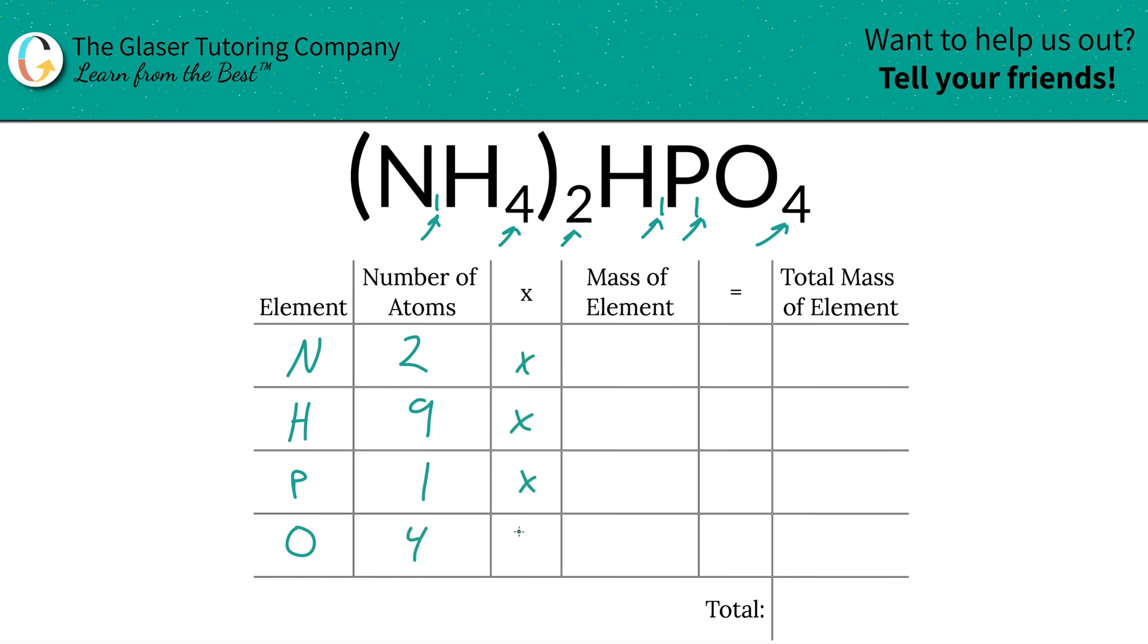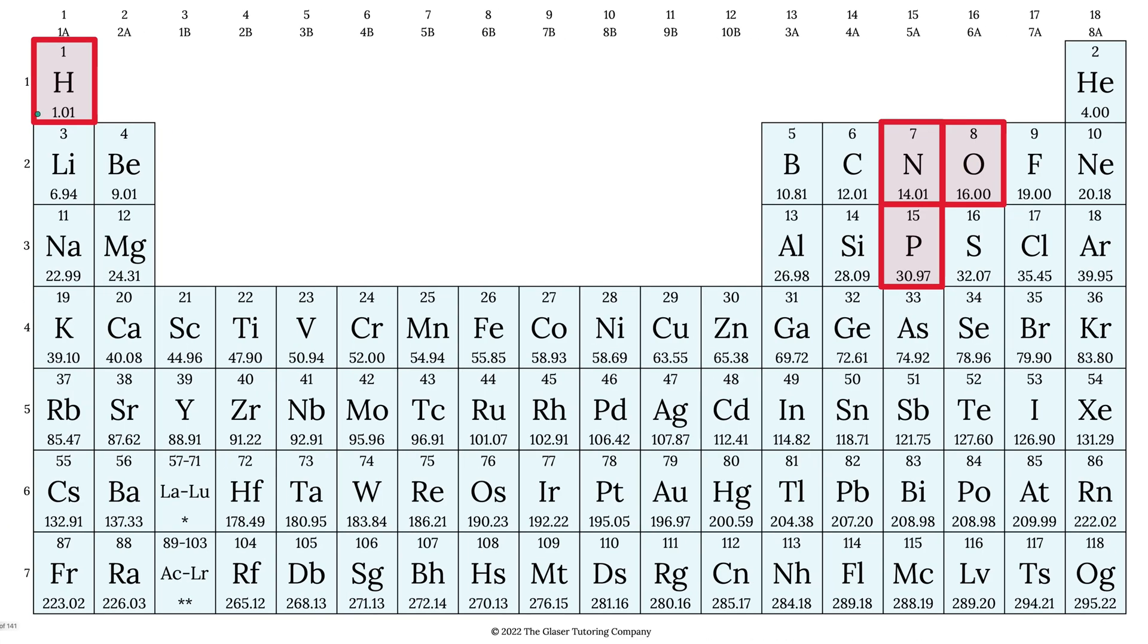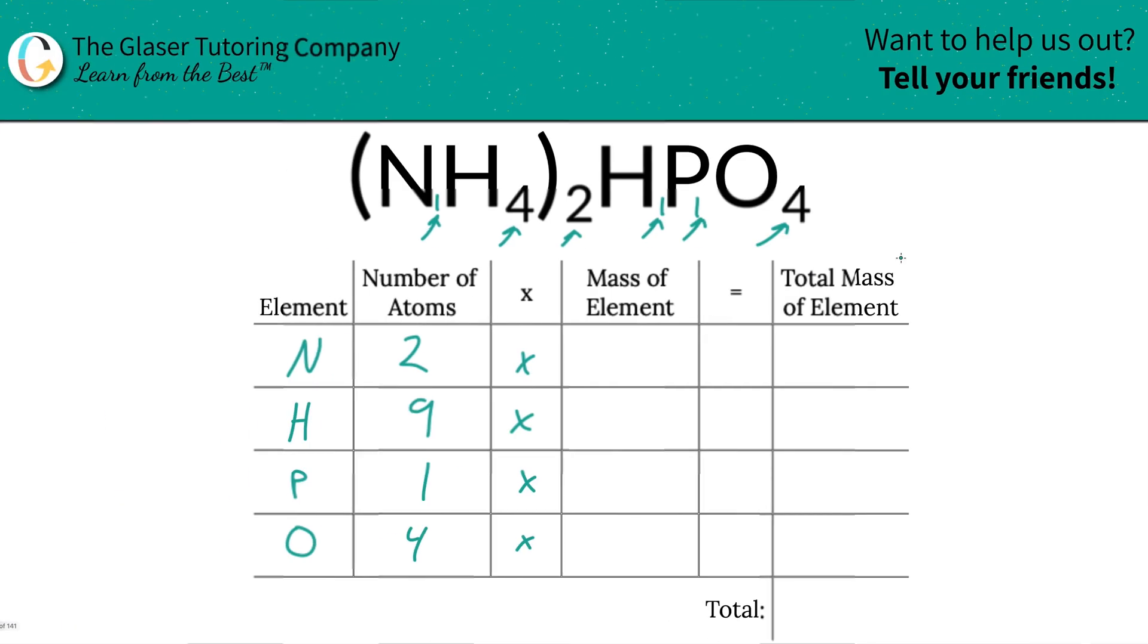Then we're going to take the number of atoms of each and multiply it by the mass of the element. These masses are found on the periodic table. Here they are. Hydrogen is 1.01, nitrogen is 14.01, oxygen is 16, and phosphorus is 30.97. So that's what we're going to write down. Nitrogen is 14.01, hydrogen is 1.01, phosphorus is 30.97, and oxygen is 16.